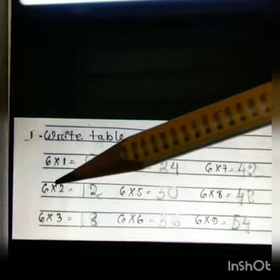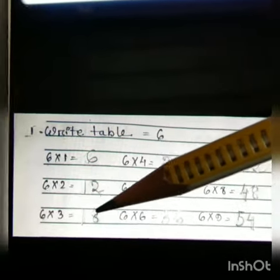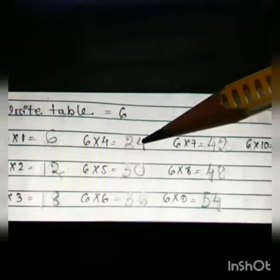6 ones are 6, 6 twos are 12, 6 threes are 18, 6 fours are 24, 6 fives are 30, 6 sixes are 36, 6 sevens are 42, 6 eights are 48, 6 nines are 54, 6 tens are 60.